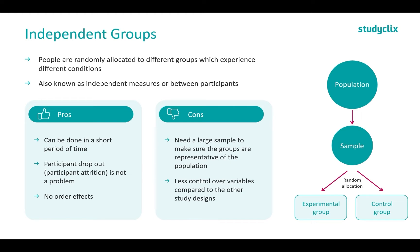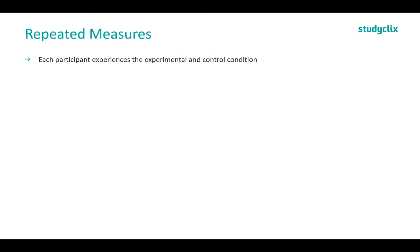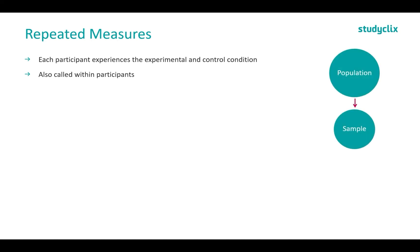Now looking at our next study design: repeated measures. Each participant experiences both the experimental and control condition. This is also known as within participants because we're looking for a difference within the participants rather than between different ones. We start off with our population, take our sample, have the sample experience the control condition, and then the experimental condition. So everyone in our sample experiences both conditions.